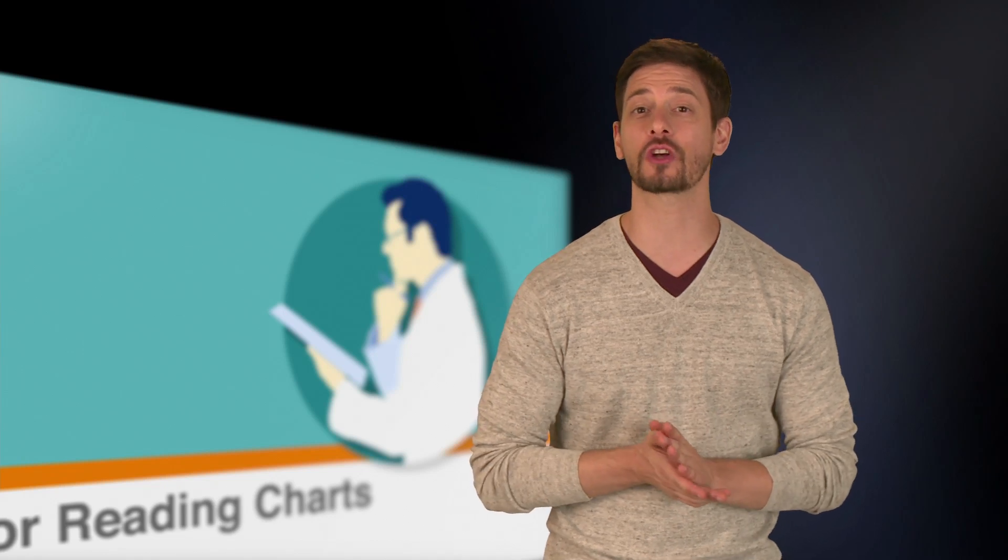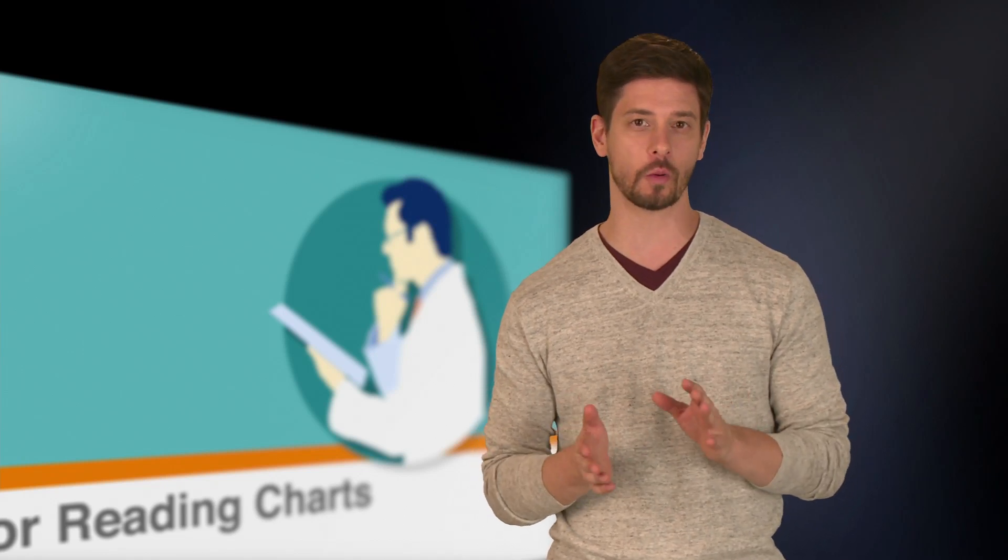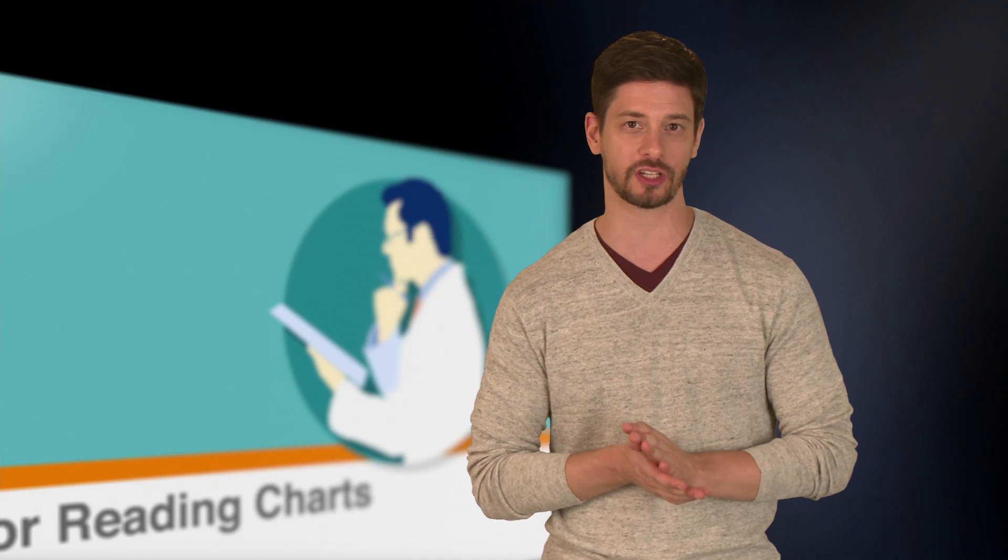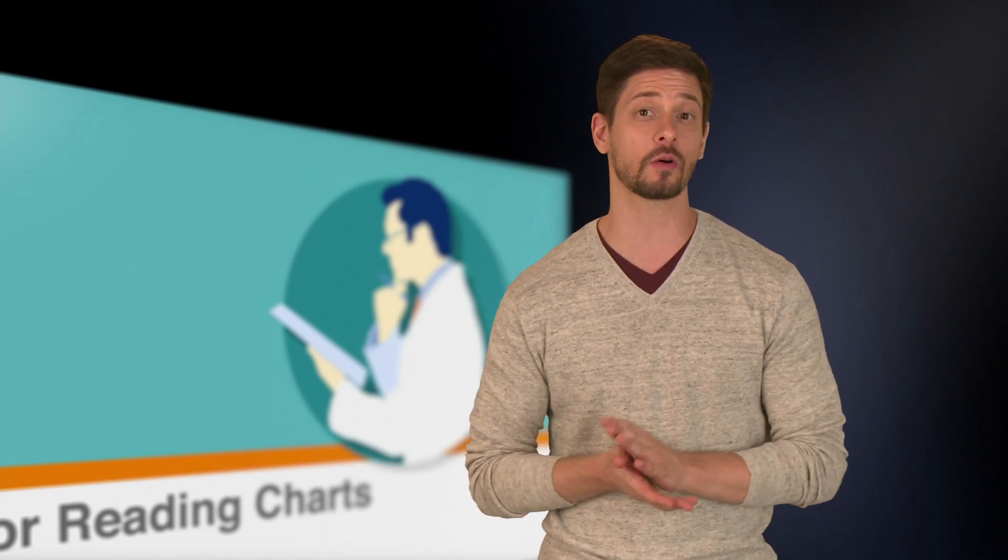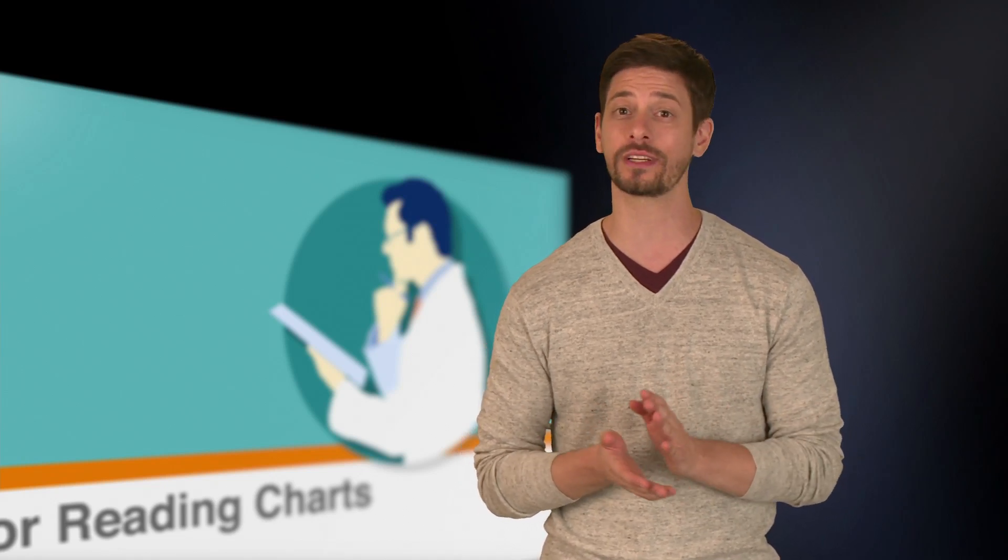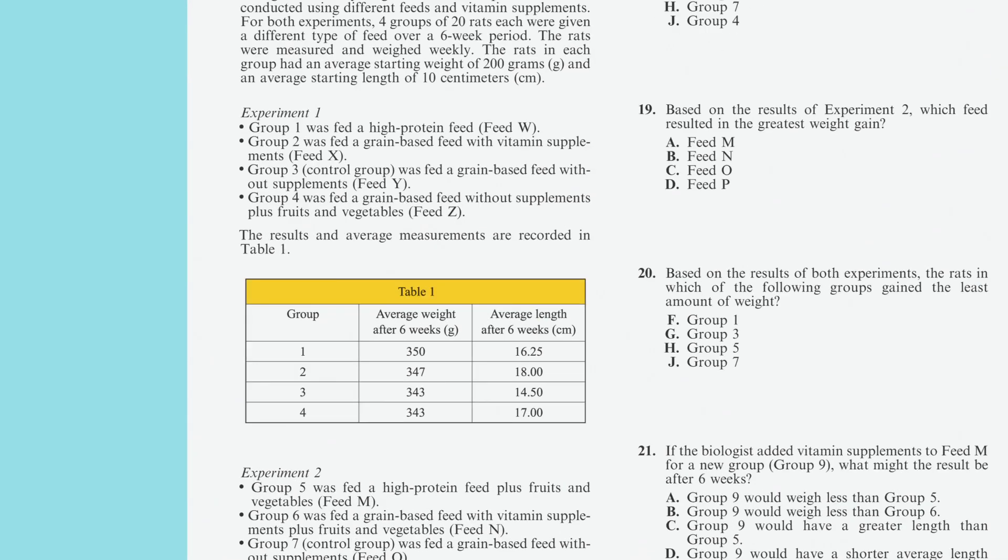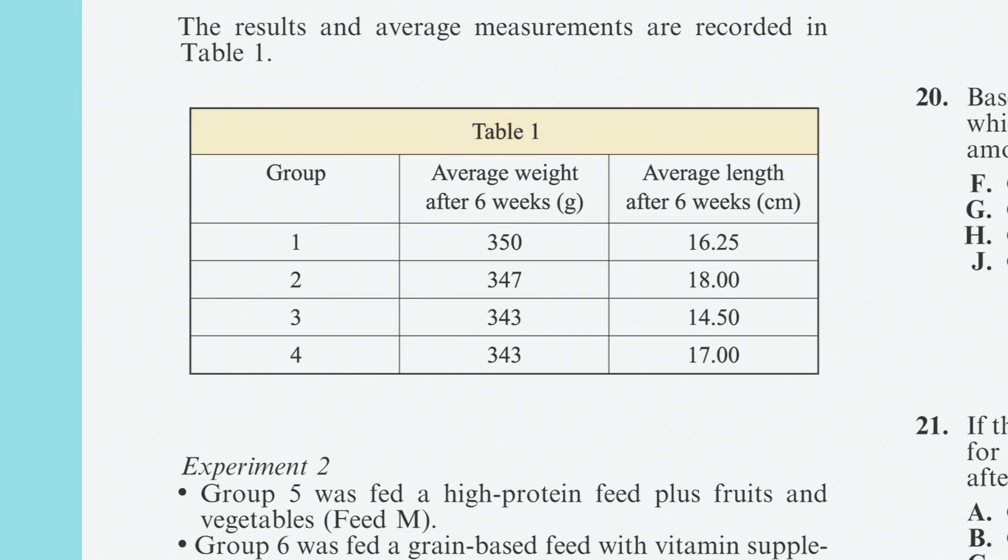The first thing to remember when you're reading charts is that the information isn't always presented in a linear fashion. In other words, the data isn't always given in an ascending or descending order. For example, in this table, the numbers in the middle column decrease as you move down the chart, but the numbers in the right column aren't in any order.